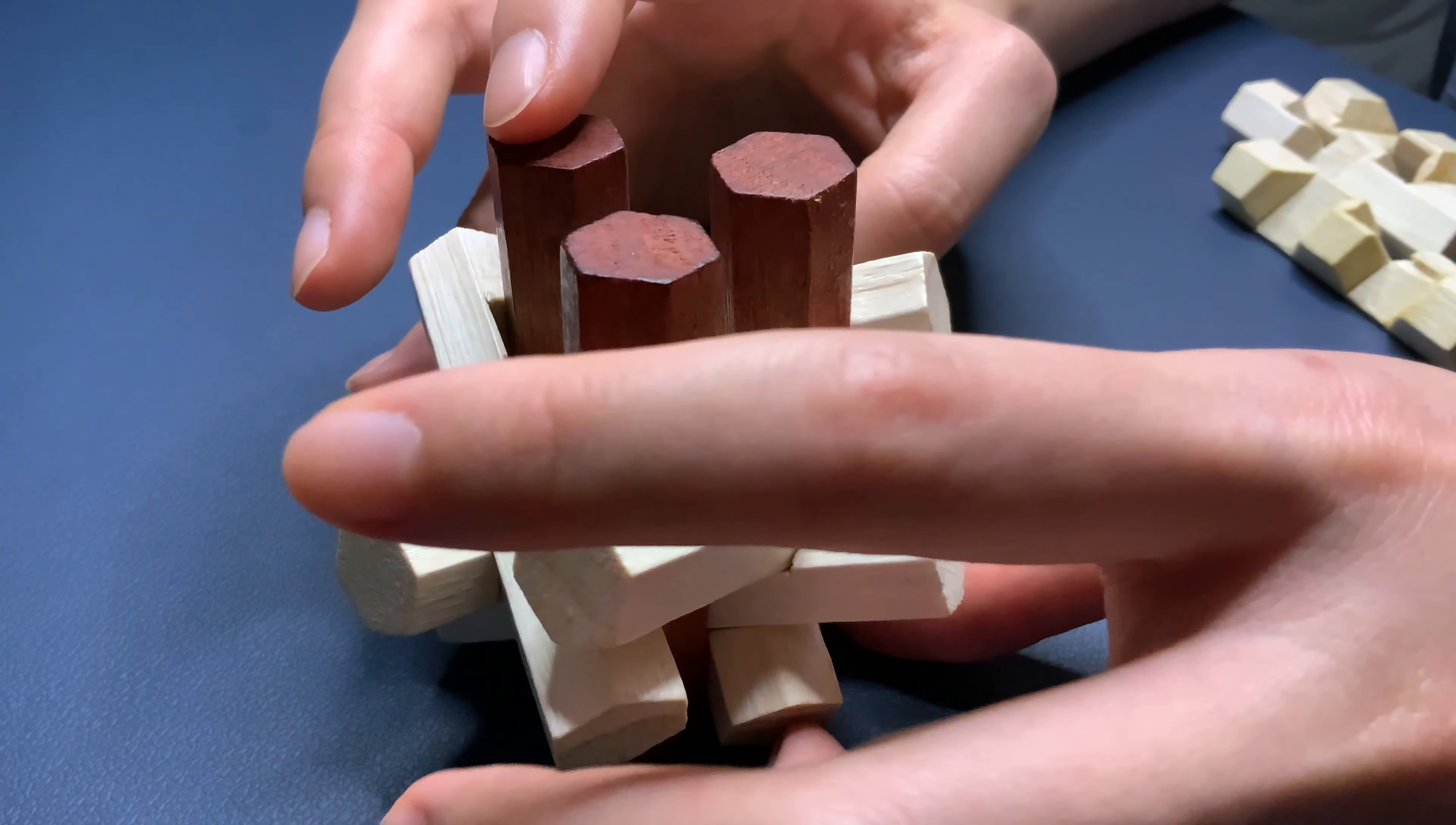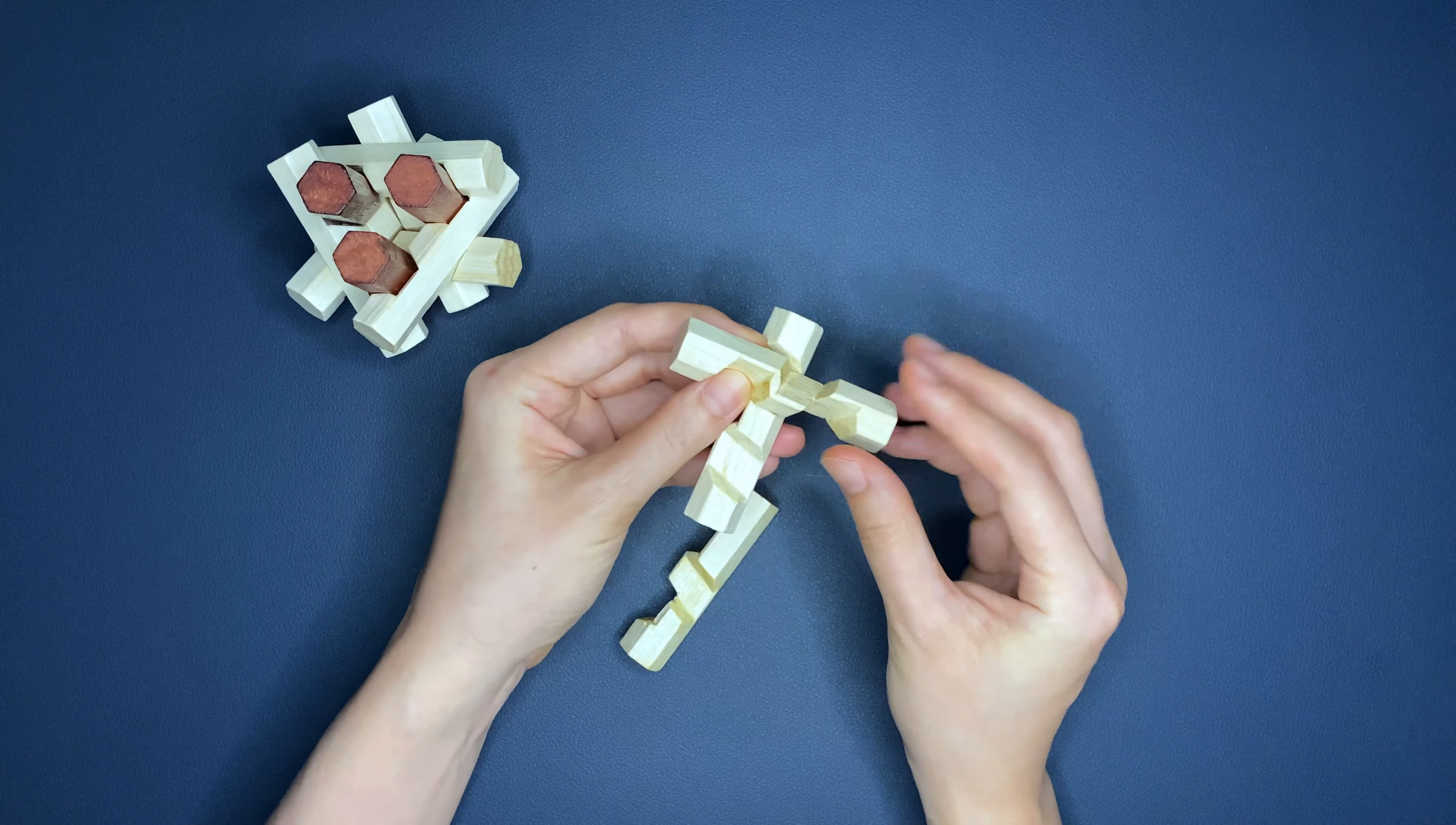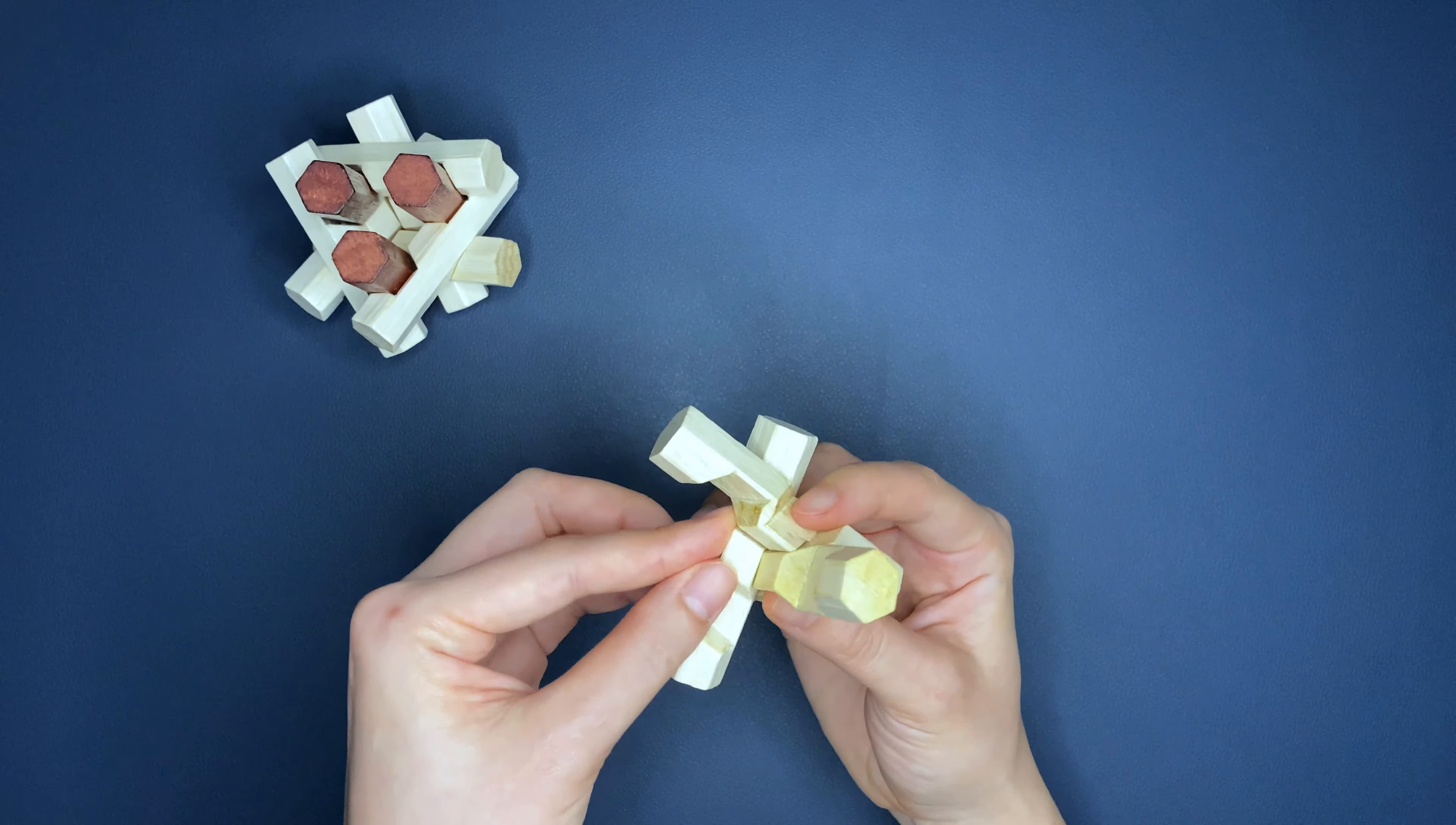So now you have the 9 pieces together like this and everything is ready for the last 3 pieces to be put onto the top. So what you need to do is to line the 3 pieces like this. Make sure the carve out faces the outside because that's the carve out here, here and here are where the brown pieces, where it's going to fit into the brown pieces.